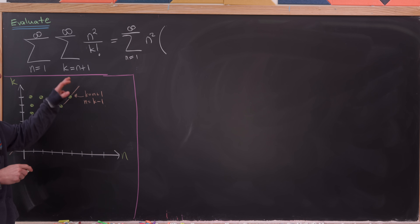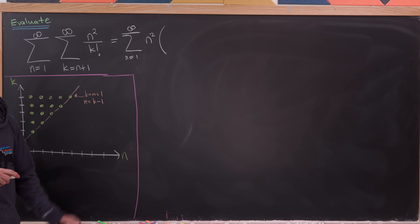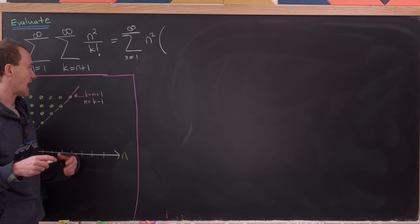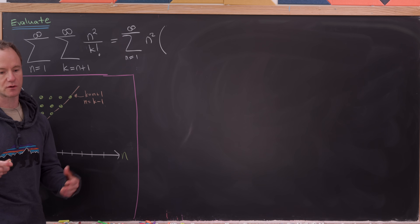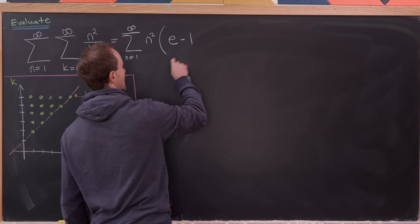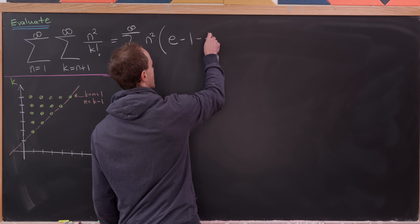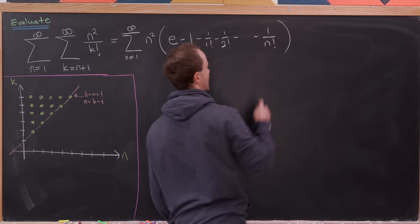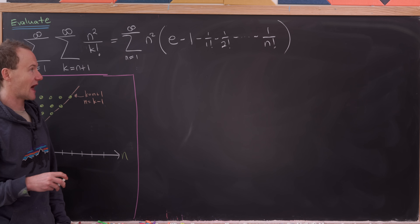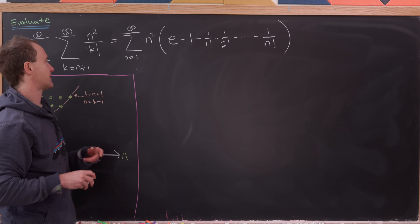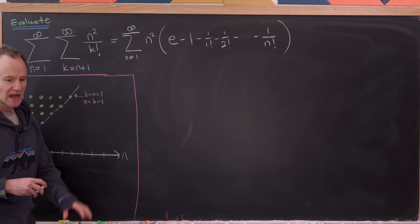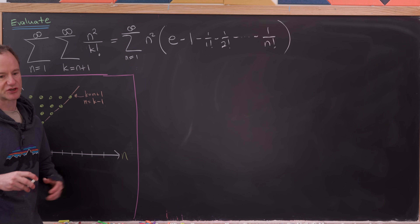What we'd like to do is add in the first n plus 1 terms (starting at 0) and then subtract them as well. If we add in those terms, the inner sum becomes the sum as k goes from 0 to infinity of 1 over k factorial, which is e. Then subtracting them, we subtract 1 minus 1 over 1 factorial minus 1 over 2 factorial all the way down to 1 over n factorial. That parenthetical expression corresponds exactly to the original inner sum with the first terms added and subtracted.